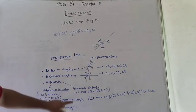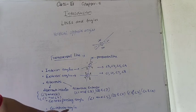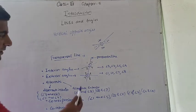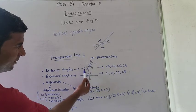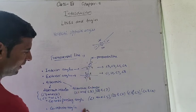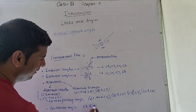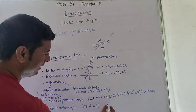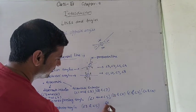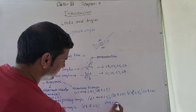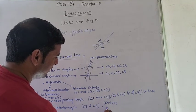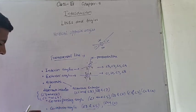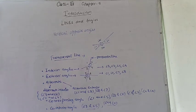Next are co-interior angles. Co-interior angles are angle 4 and angle 5, and angle 3 and angle 6. These are known as the co-interior angles. So this is all about the introduction of Lines and Angles. Okay.